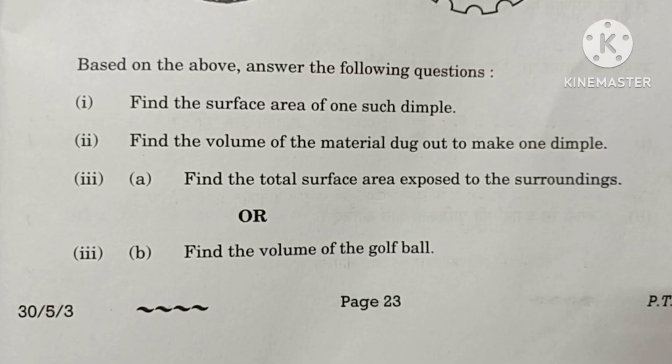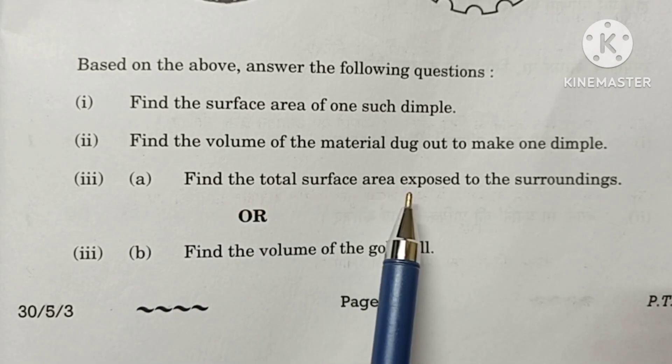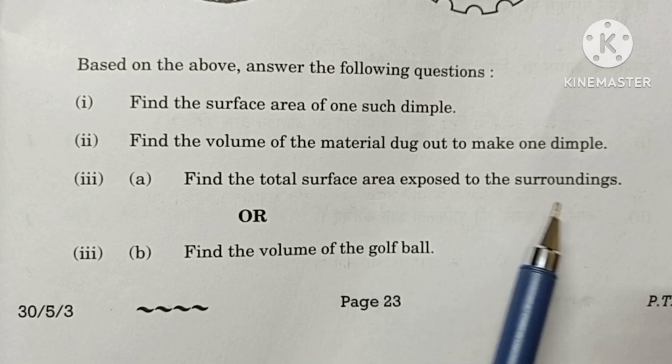This is a question from CBSE 2023 March. The question paper number is 30/5/3. The third question is, find the total surface area exposed to the surroundings. That means, those who are exposing outside.